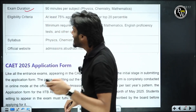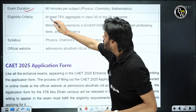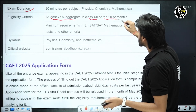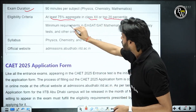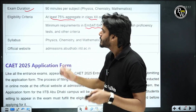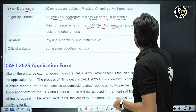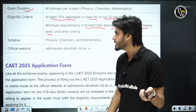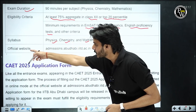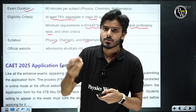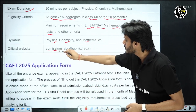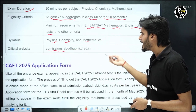The eligibility criteria: at least 75% aggregate marks in class 12th, or top 20th percentile. There is also a minimum requirement in AMSET or SAT Mathematics — we'll discuss that. An English proficiency test is also required. The subjects are Physics, Chemistry, and Mathematics. To enroll for the exam, visit the official website: admissions.abudhabi.iitd.ac.in.